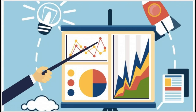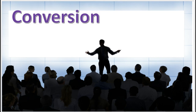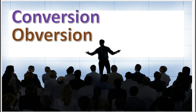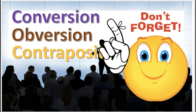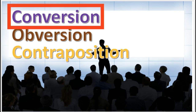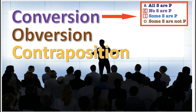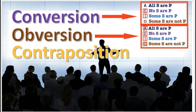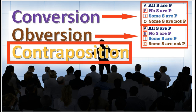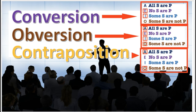In the last few videos we discussed conversion, obversion, and contraposition. Remember, conversion gives logically equivalent results for E and I propositions. Obversion gives logically equivalent results for all four propositions, and contraposition gives logically equivalent results for A and O propositions.